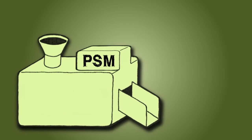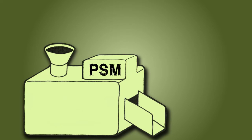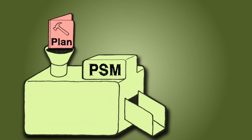The first input into the plan scope management process is the project management plan. Even though many of the subsidiary plans become part of the overall project management plan, the project management plan and its related documents and information is part of the subsidiary plans that compose the project management plan.